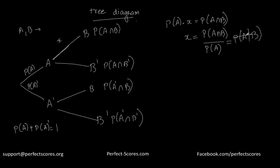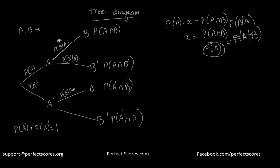So the branch labels on the tree diagram are: the probability of B occurring given that A has occurred, the probability of B not occurring given that A has occurred, the probability of B occurring given that A has not occurred, and the probability of B not occurring given that A has not occurred.